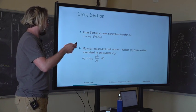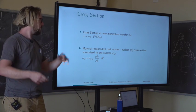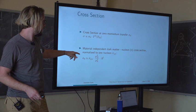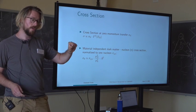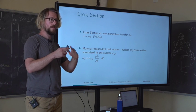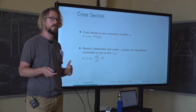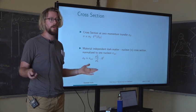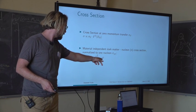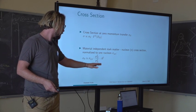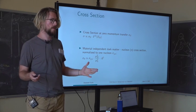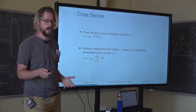The cross section shown in limit plots is the material-independent dark matter–nucleus cross section normalized to one nucleon. This allows comparison of limits between different experiments and especially between different target materials. We get an A-squared dependence, which tells us that heavier nuclei are preferred for higher cross sections.